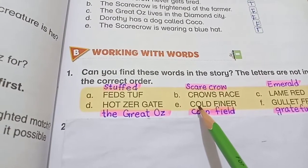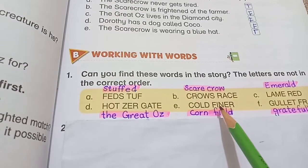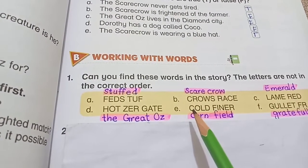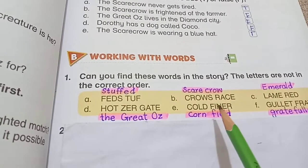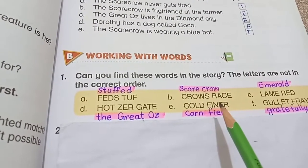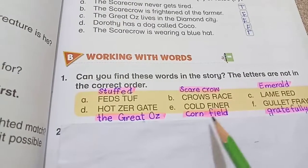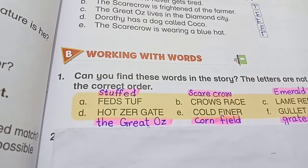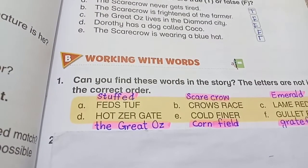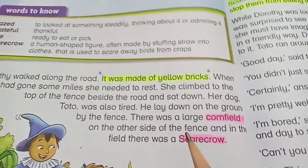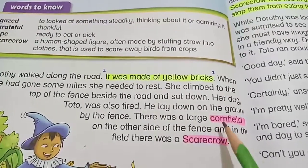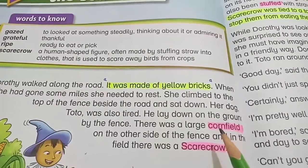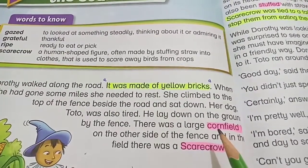Part E: c-o-l-d-f-i-n-e-r. This word is actually 'cornfield' — c-o-r-n, corn, f-i-e-l-d, cornfield. If you remember the story, you will know you have also read this word. Look here on page number two; the word 'cornfield' is there in the very starting paragraph of the story, so this word is also present in the story.